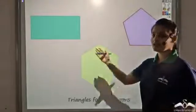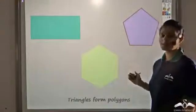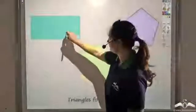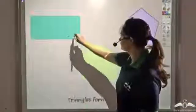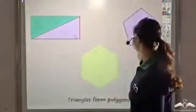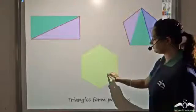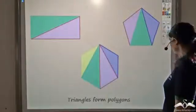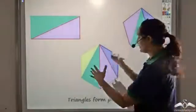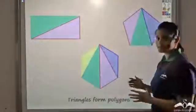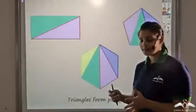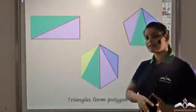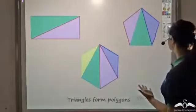We had seen how every polygon can be considered to be made up of triangles. So each polygon can be made up of triangles, and further these triangles can be made of right triangles.